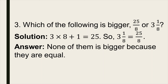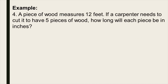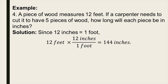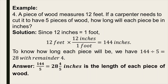For our last example, let's have a problem-solving exercise. A piece of wood measures 12 feet. If a carpenter needs to cut it into 5 pieces, how long will each piece be in inches? First, convert feet to inches: 12 feet multiplied by 12 inches per foot equals 144 inches. Then divide 144 by 5: we get 28 with a remainder of 4. So 144 over 5 equals 28 and 4 over 5 inches, which is the length of each piece of wood.